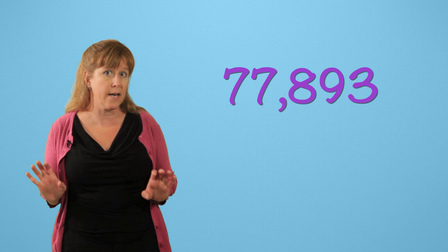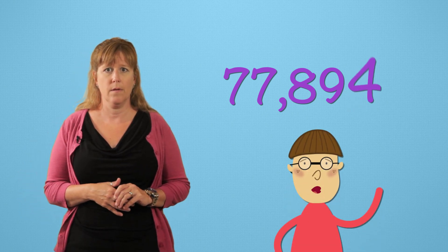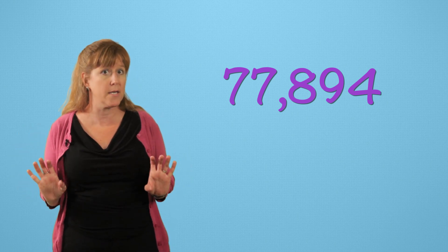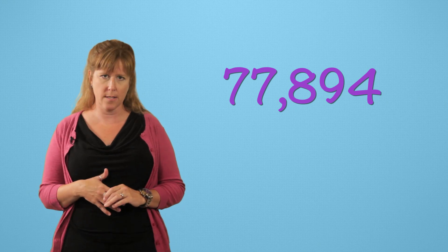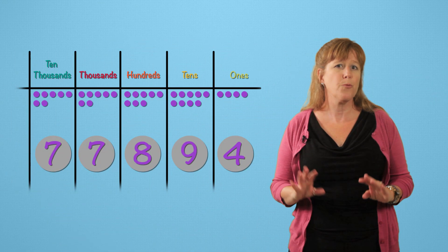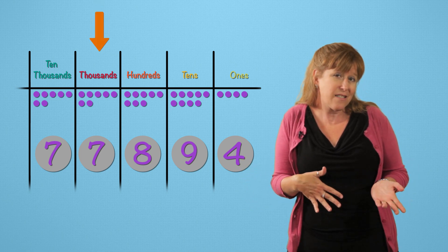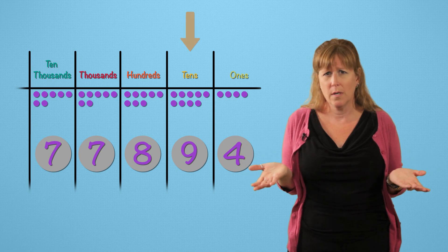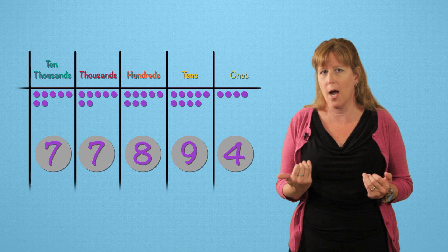So we've got 77,894 points. But I really don't want to keep saying that. So let's round this number. First we need to decide which place value we are going to round to. Thousands? Ten thousands? Tens? How do we know? Well sometimes we can decide for ourselves. What's going to work best for us?